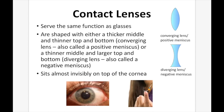Contact lenses serve the same function as glasses. They're shaped with either a thicker middle and thinner edges — a converging lens, also called a positive meniscus — or a thinner middle and larger edges, a diverging lens or negative meniscus. The benefit of contact lenses is that they sit invisibly on top of the cornea, allowing freedom from glasses. However, they can be irritating, difficult to put in, and that's why many people stop using them. You can also get colored contact lenses to change eye color.